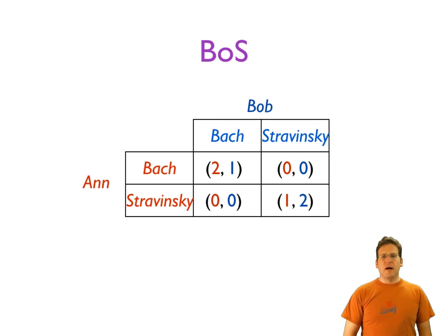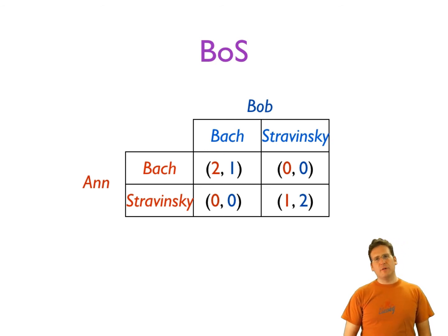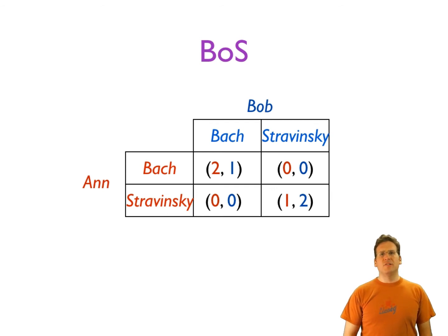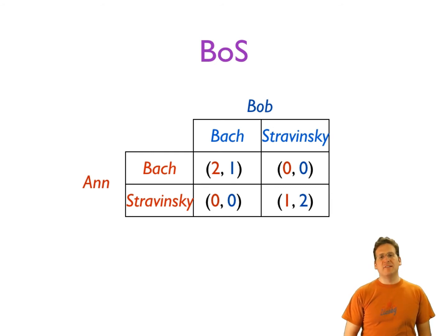If Anne goes to Stravinsky and Bob goes to Stravinsky as well — the same concert — Anne gets a payoff of one and Bob gets a payoff of two. If they go to different concerts, they both get zero. So they get zero if they go to different concerts but positive payoffs if they go to the same concert. They both want to end up in the same place, but one cares more about Bach and the other more about Stravinsky — can you tell which one?